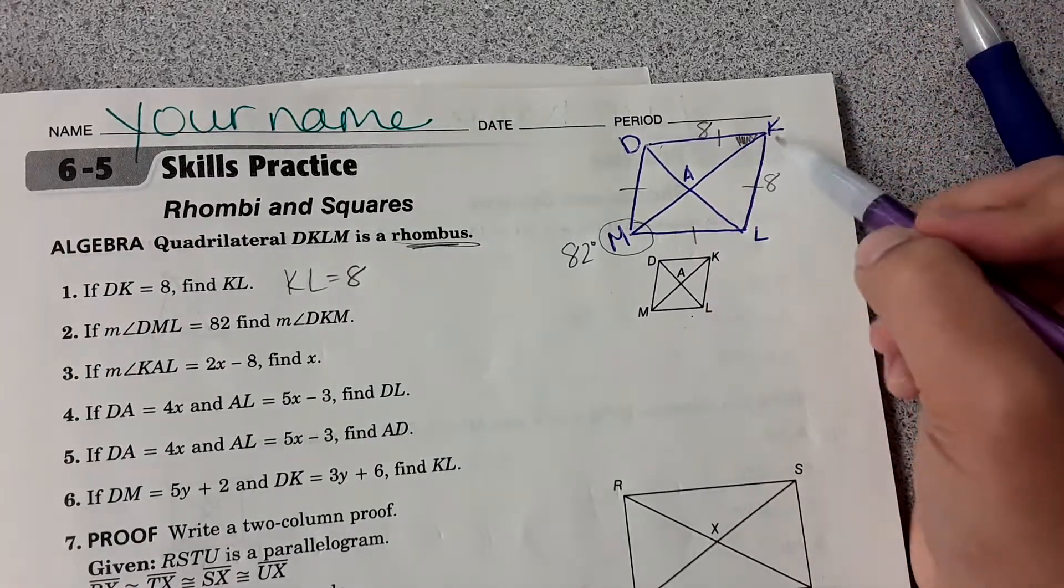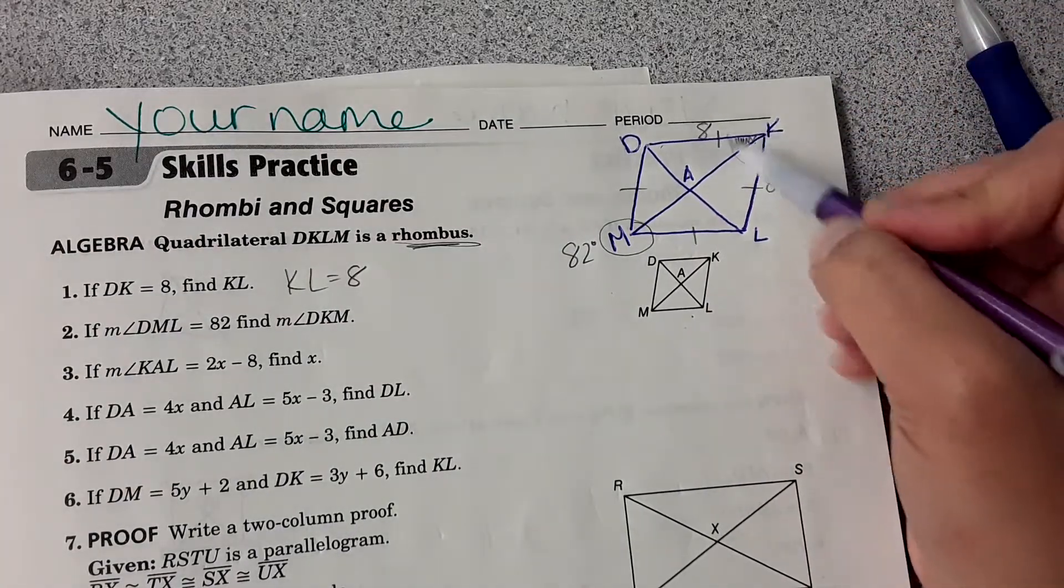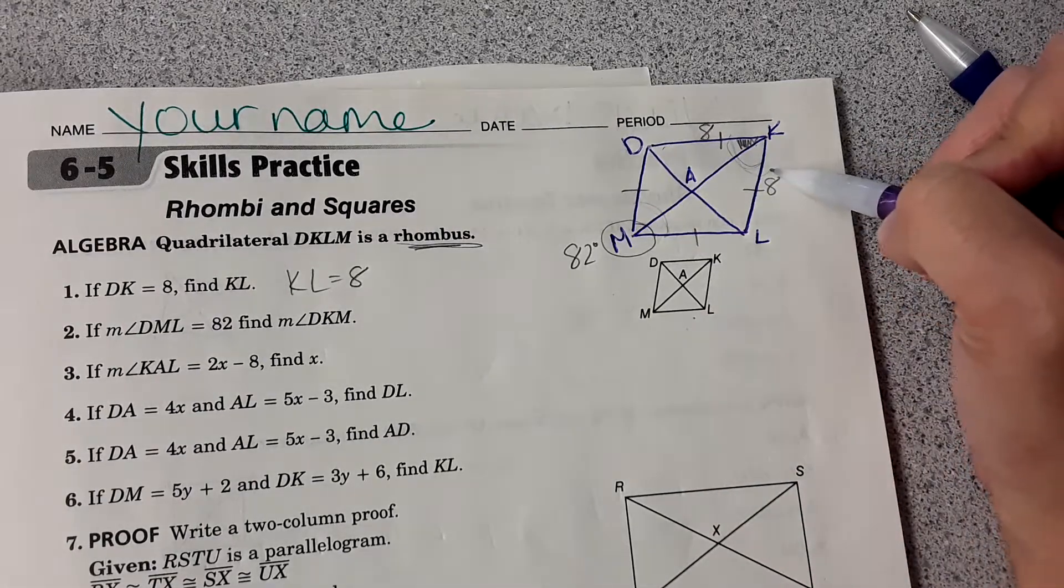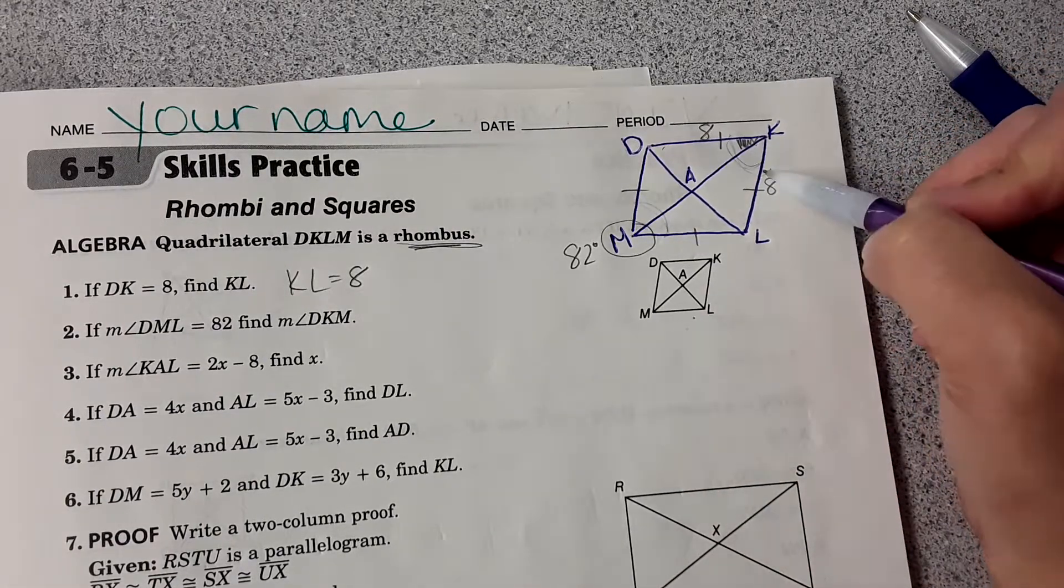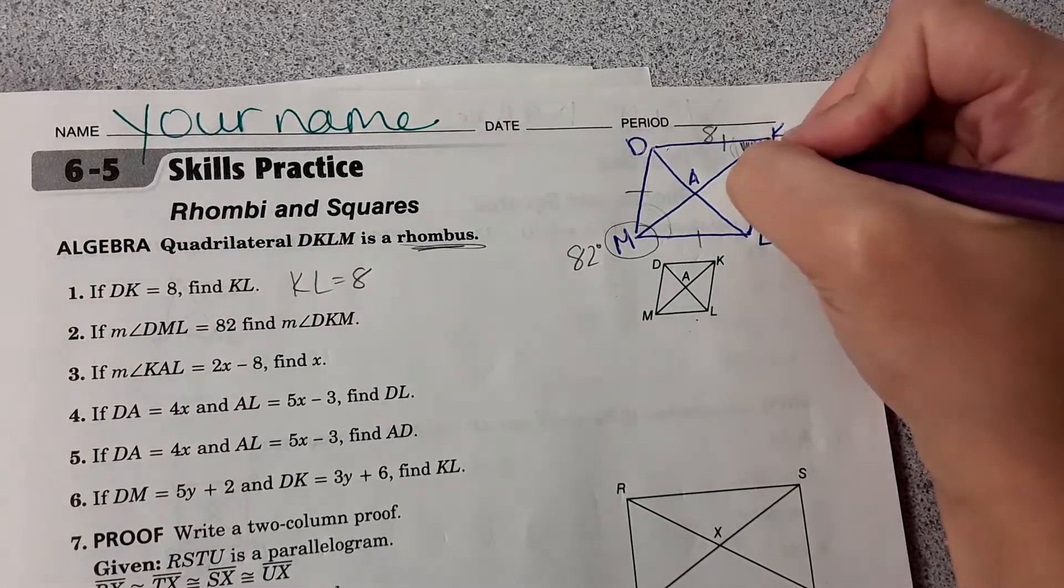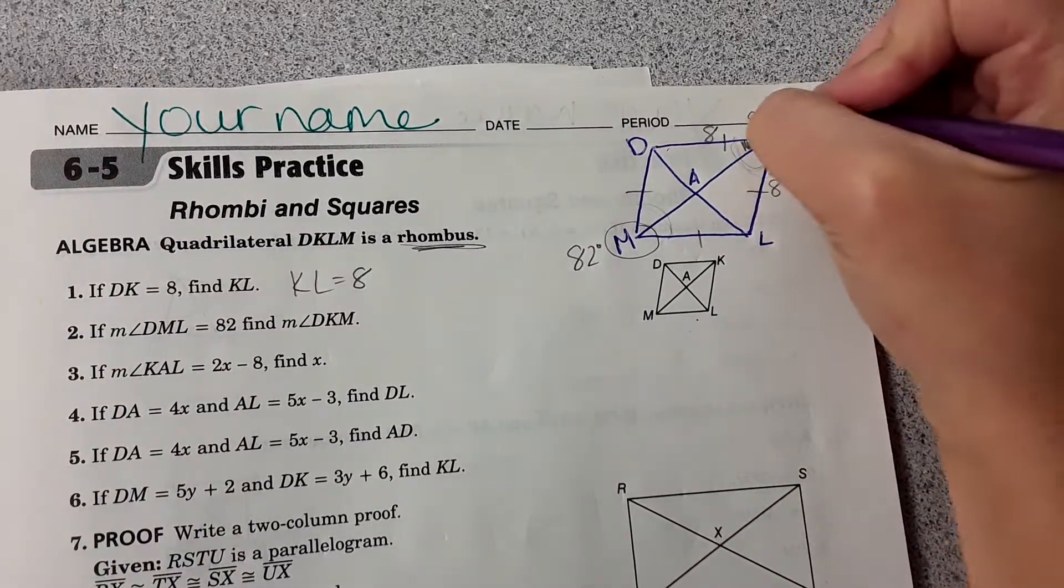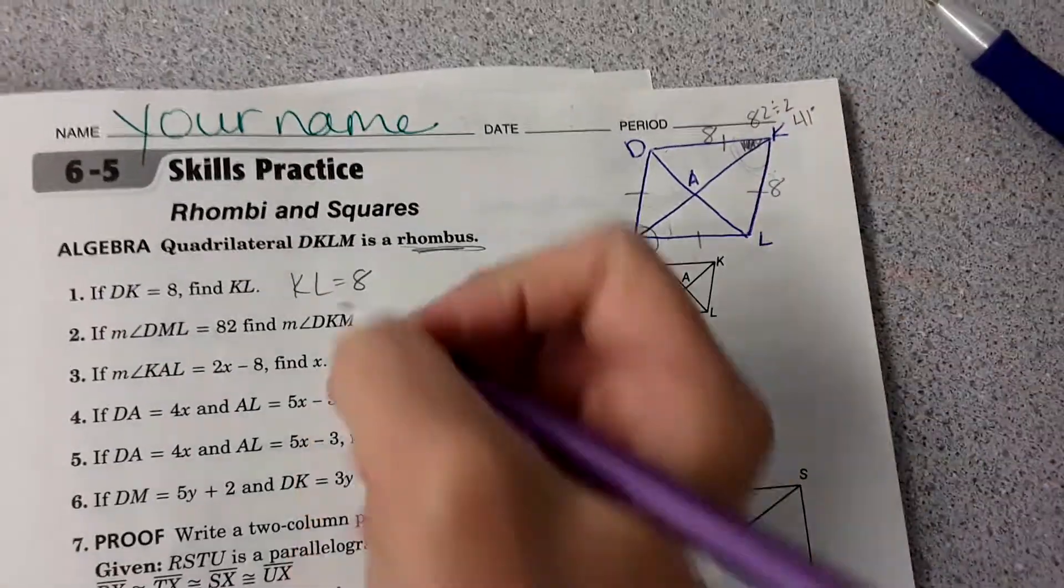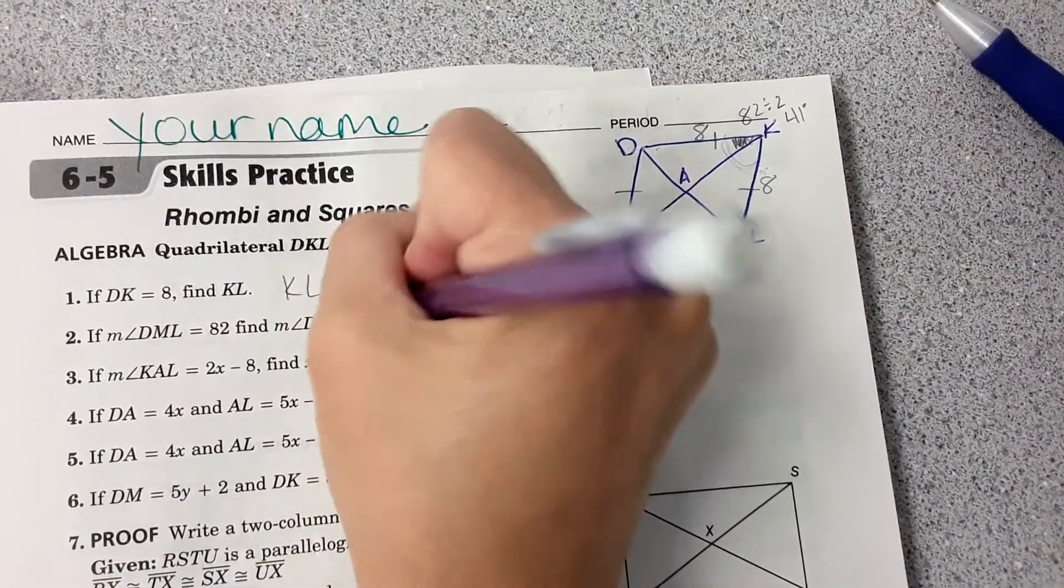Well, it's a parallelogram, so this whole angle is the same measure as this. So this whole thing is 82 degrees. Then in a rhombus, the diagonals bisect that angle. So just this part would be 82 divided by 2, which would be 41 degrees. So measure of DKM is 41 degrees.